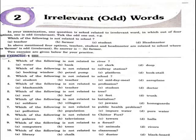We will try the first exercise. Question number one: which of the following is not related to river? Options are water, bank, clerk, deep. The right answer will be clerk. Clerk is not related to river.